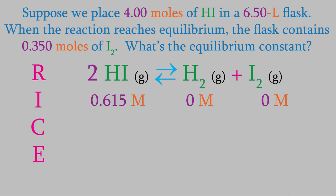Once again, we don't know the concentration changes yet, so we'll have to leave the next row blank for now. In the bottom row, we want the equilibrium concentrations. We know that there are 0.350 moles of I2 at equilibrium. Since this is also a gas, we know that it will take up the whole flask, so the volume is 6.50 liters again.